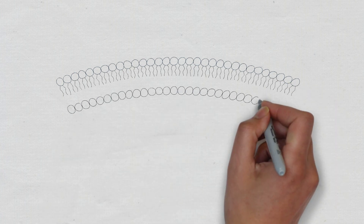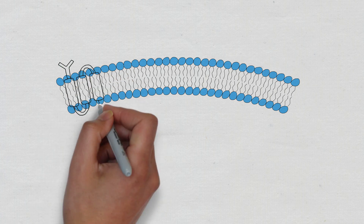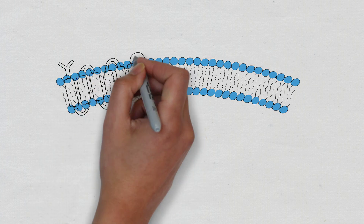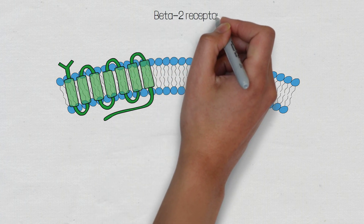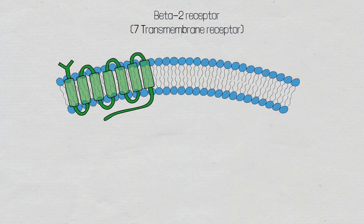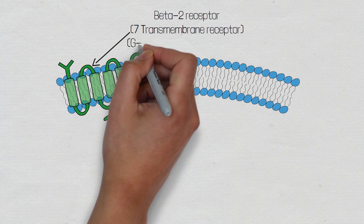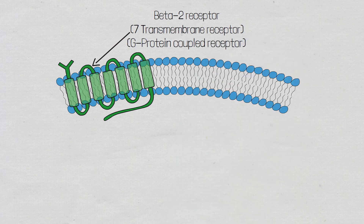Beta-2 receptors are seven transmembrane receptors, which means they pass through the cell membrane seven times. Each of these seven subunits that pass through the cell wall are called alpha helices, and an alpha helix is how we describe the coiled shape of an amino acid. These seven transmembrane receptors are also known as G-protein coupled receptors, which are coupled with G-proteins located within the cytoplasm.